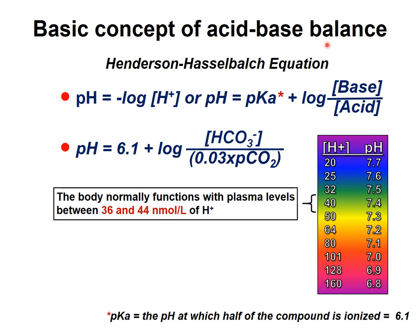The basic concept of acid-base balance calculation dates back about 100 years to the Henderson-Hasselbalch equation. The pH is determined by the logarithm of the ratio of base to acid. We consider bicarbonate as the base and CO2 as the acid. pH is a double-altered measure — it's the negative logarithm of hydrogen ion concentration — so changes are blunted and inversely related to hydrogen ion concentration. Early on, only pH could be measured.